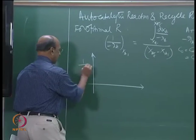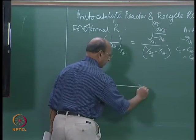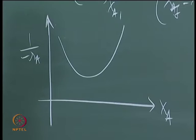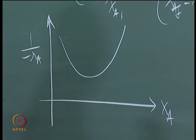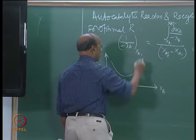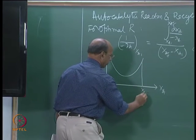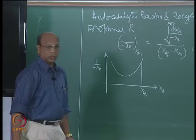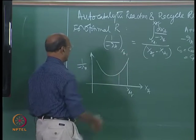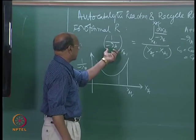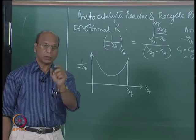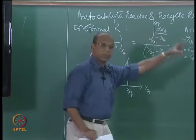For an autocatalytic reaction, how do I show the curve? The 1/(-rA) versus XA curve looks like this — it has a minimum and rises on both sides. XAF is fixed here, because we fix XAF and then we try to find the optimal R. The condition says that the rate entering at XA1 must equal the average rate throughout the reactor.